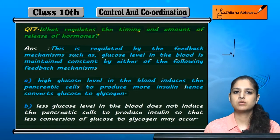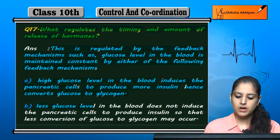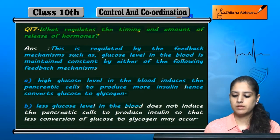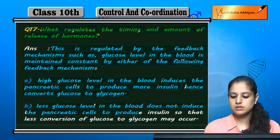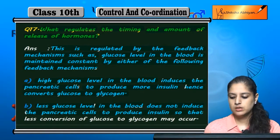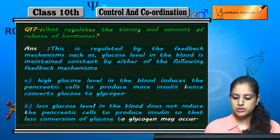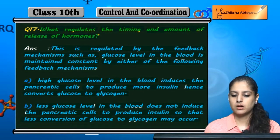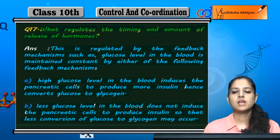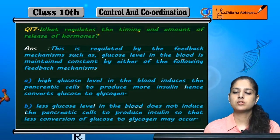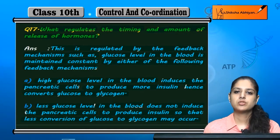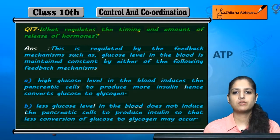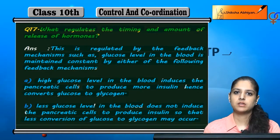When glucose is low, it does not induce the pancreatic cells to produce insulin, so less conversion of glucose to glycogen occurs. Insulin is secreted in a lesser amount, meaning glucose remains higher than glycogen, and this is how the body's blood sugar level is maintained.